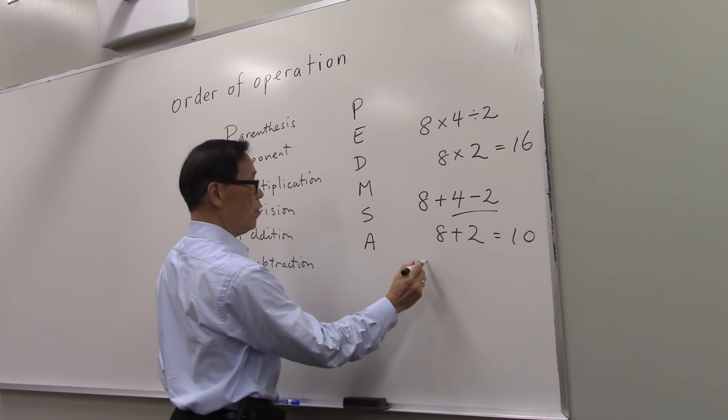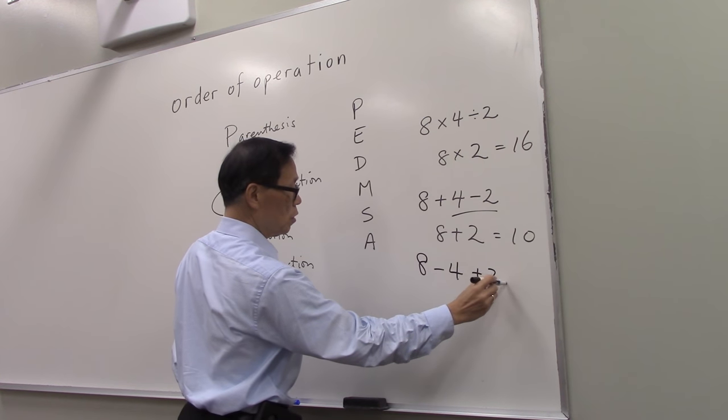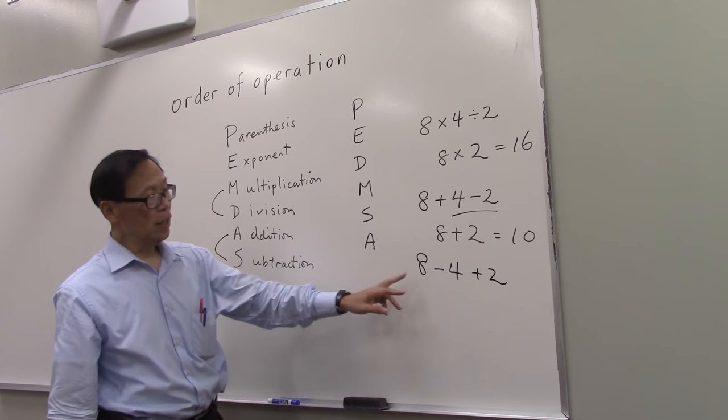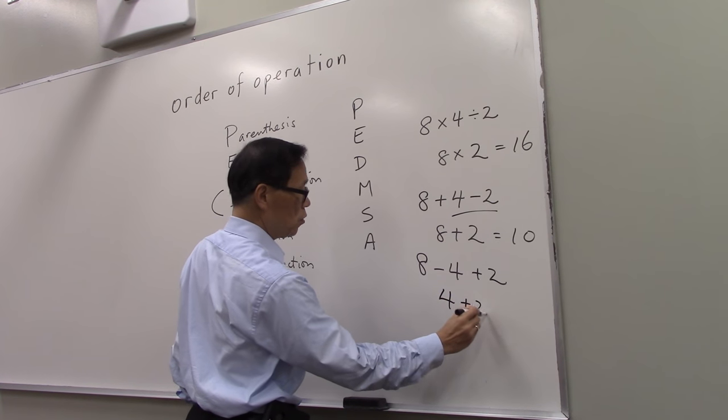Now, if you had 8 minus 4 plus 2. Again, 8 minus 4 is 4, 4 plus 2 is 6.